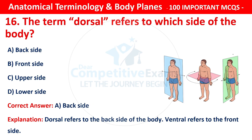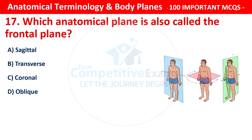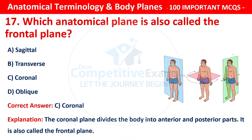Question number 17: Which anatomical plane is also called the frontal plane? Options are: sagittal, transverse, coronal, or oblique. The correct answer is C — that is coronal. The coronal plane divides the body into anterior and posterior parts. It is also called the frontal plane.